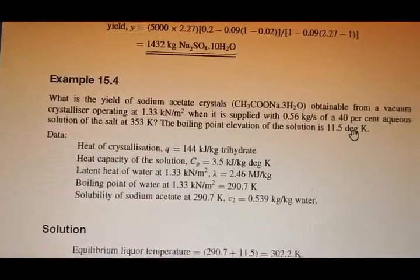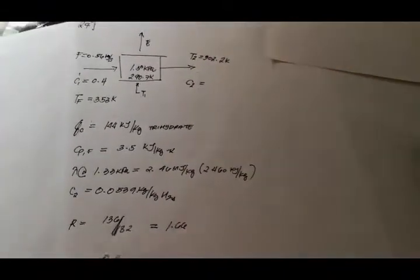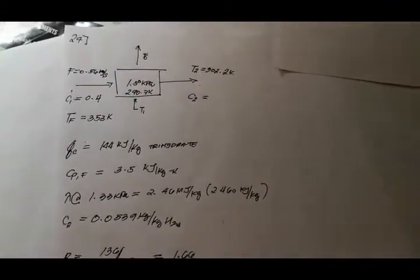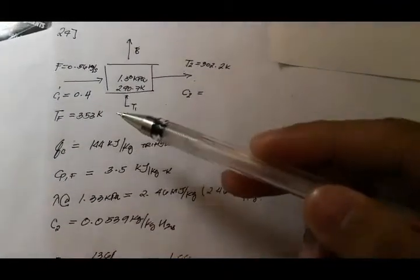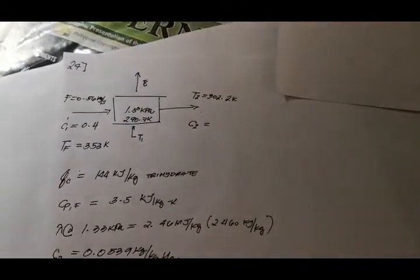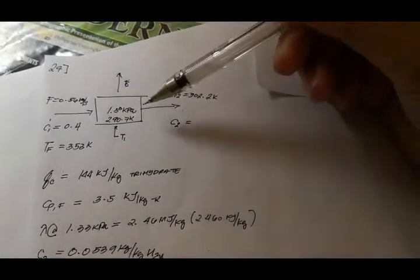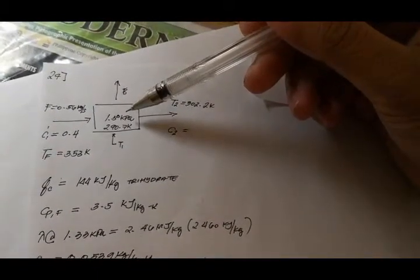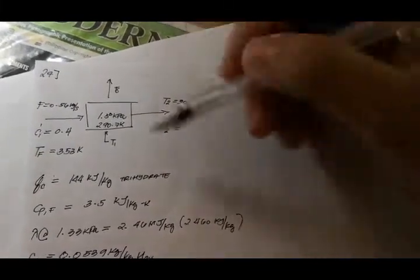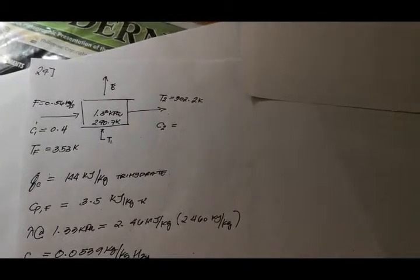So let's start. I have written down the given. We have the feed temperature at 353 K. We know that the operating pressure of our crystallizer is at 1.33 kN/m² or kPa, which corresponds to the water temperature of 298.7 K.